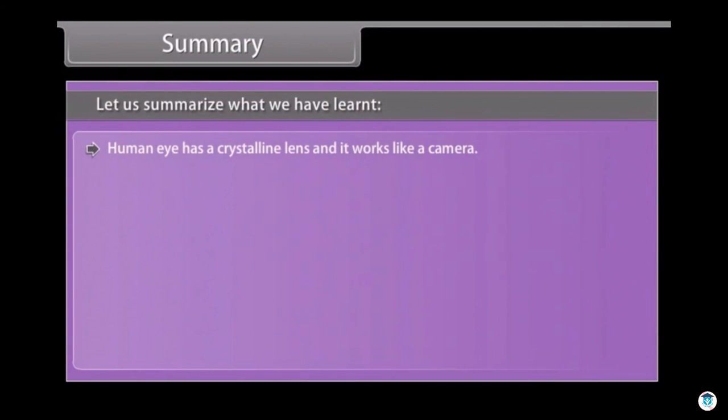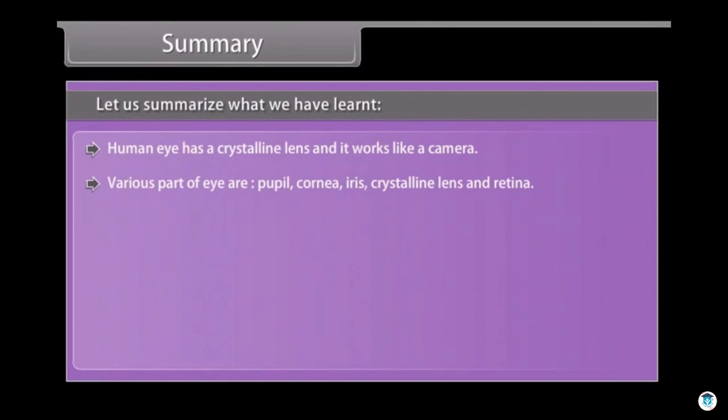Human eye has a crystalline lens and it works like a camera. Various parts of eye are pupil, cornea, iris, crystalline lens, and retina. Human eye lens has the ability of increasing or decreasing the focal length. It is known as accommodation.